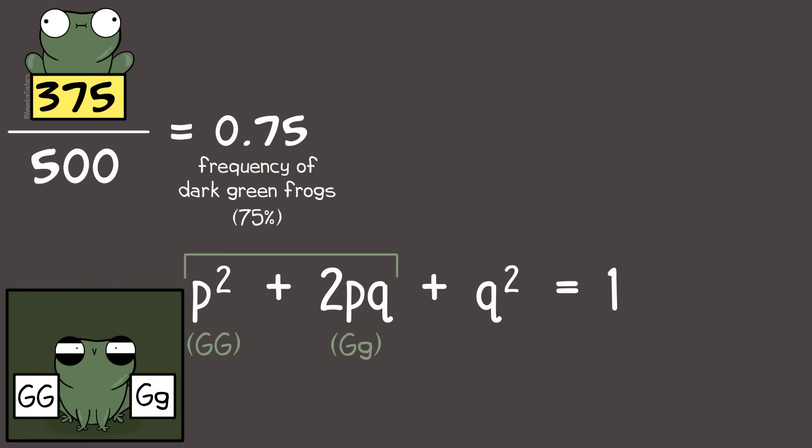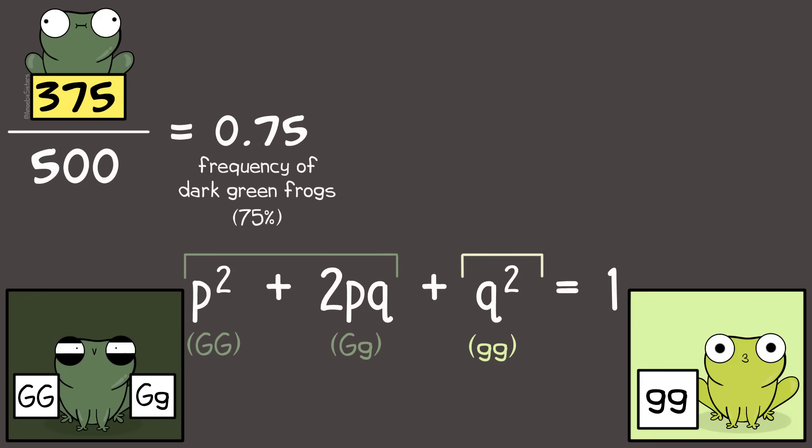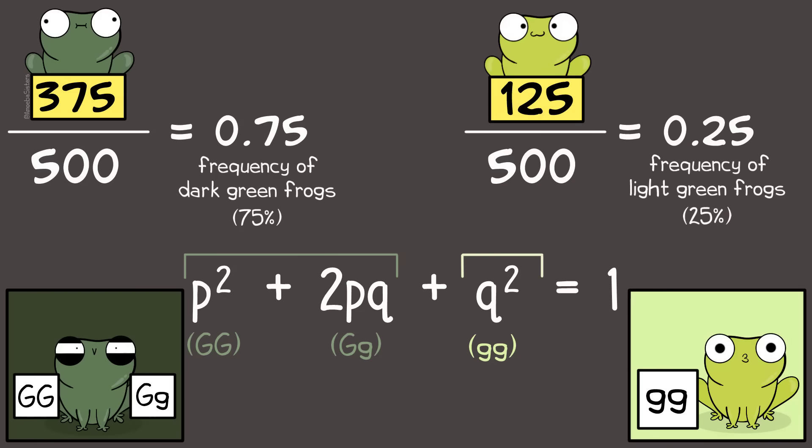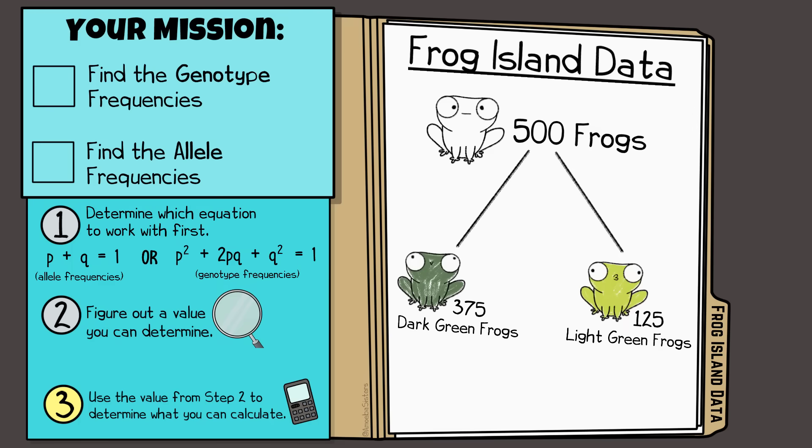The problem is dark green frogs could have genotype big G big G, or they could have big G little g. I can't assume they're one genotype or the other, so I shouldn't use that value. The recessive genotype resulting in a light green trait is safe to use though because I know that light green frogs are the genotype little g little g. They can't be anything else. So 125 frogs out of 500 frogs equals 0.25. That means from the equation the value q² equals 0.25.